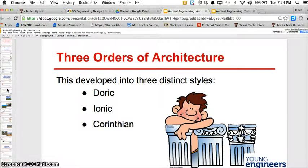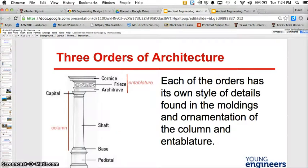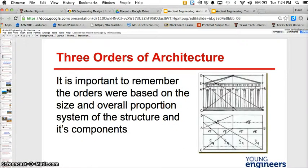And these three distinct styles are Doric, Ionic, and Corinthian. Each of the orders has its own style or details found in the moldings and ornamentation of the columns. It's important to remember that the orders were based on the size and overall proportion, system of the structure and its components. Remember, think about the overall structure, not just one individual piece.